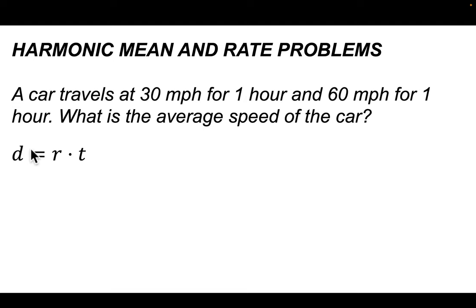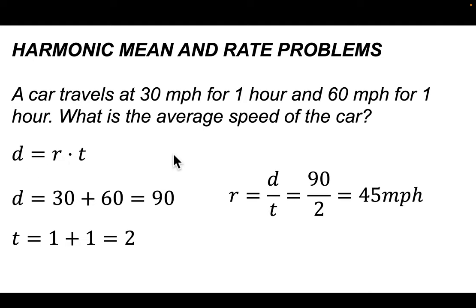Okay, so I put up the key formula here, distance is rate times time. So if you're going 30 miles per hour for one hour and then 60 miles per hour for one hour, how far are you traveling? Well, your distance would be 30 and 60, it's 90 miles. And it's happening over two hours. Now, in this case, the average rate is just 90 divided by two because rate equals distance divided by time. So it's 45 miles per hour.